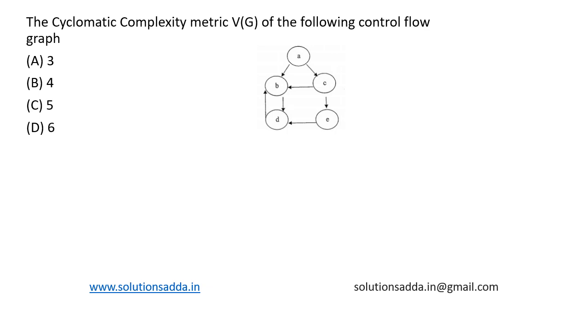The cyclomatic complexity metric of the following control flow graph is what? Cyclomatic complexity is a software metric used to indicate the complexity of a program.